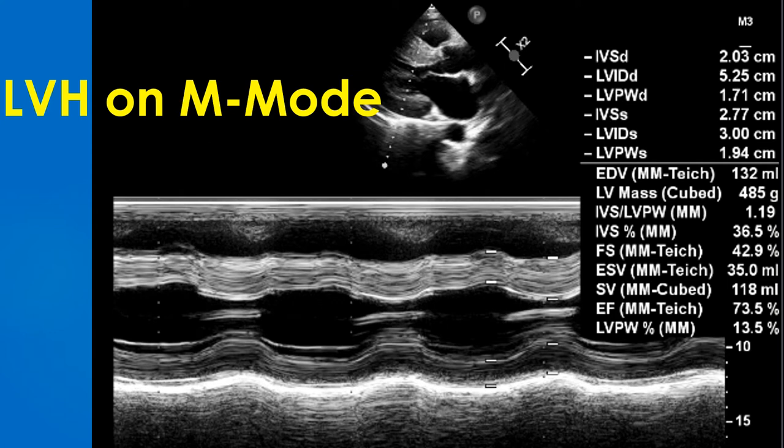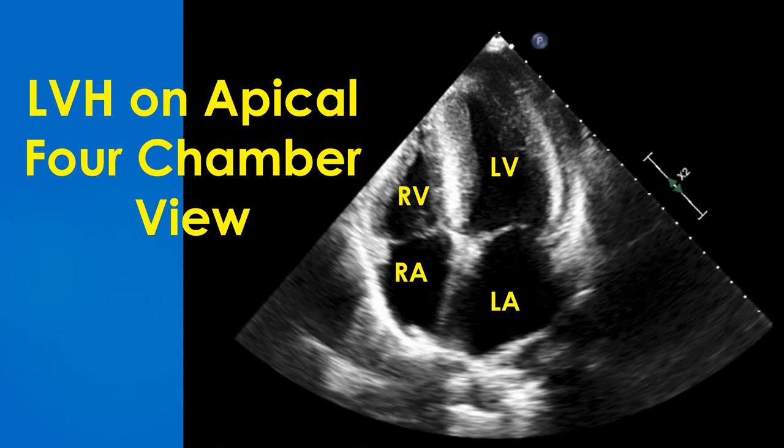LVPWS – left ventricular posterior wall systolic. EDV – end-diastolic volume. FS – fractional shortening. ESV – end systolic volume. SV – stroke volume. EF – ejection fraction.